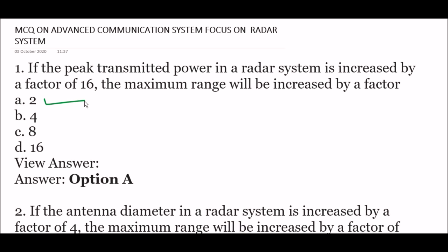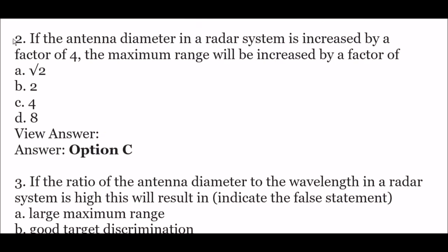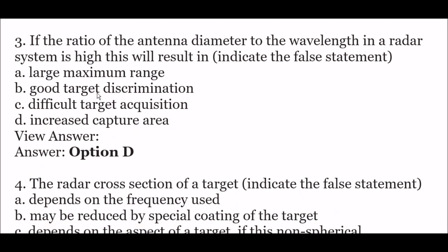Next question: if the antenna diameter in a radar system is increased by a factor of 4, the maximum range will be increased by a factor of — option A: √2, option B: 2, option C: 4, option D: 8. The right answer is option C — 4. If the antenna diameter is increased by a factor of 4, the maximum range increases by a factor of 4.